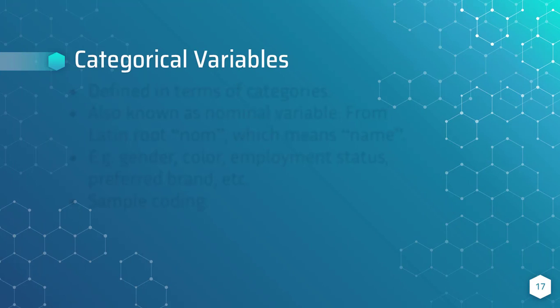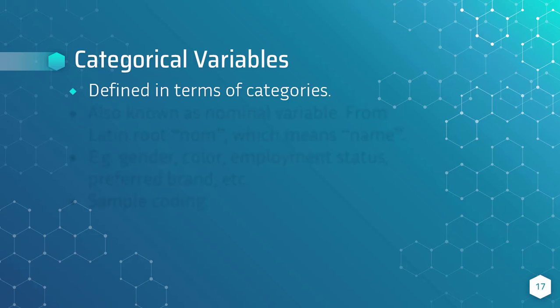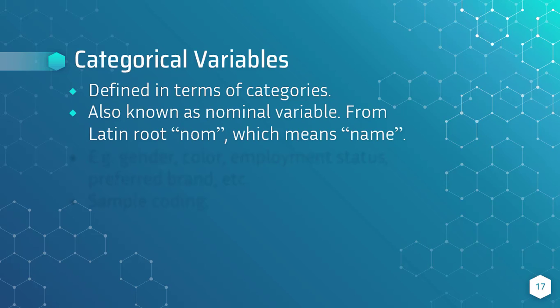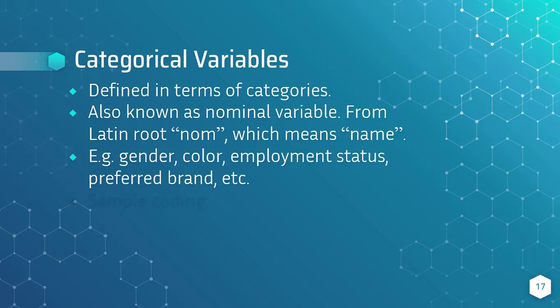Categorical variables are variables that are defined in terms of categories. The values therefore are not numerical but categorical names. This is also known as nominal variables — from the Latin root 'nom,' which means name. Some examples are gender, color coding, employment status, educational attainment, or answers of yes or no.